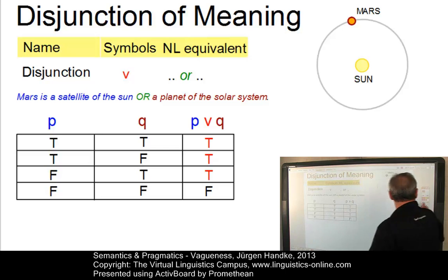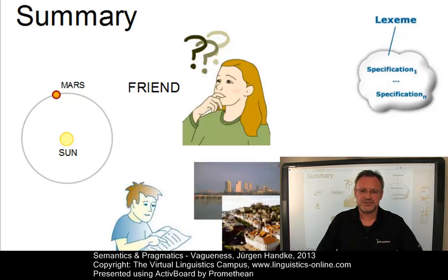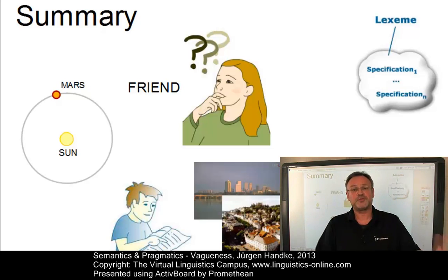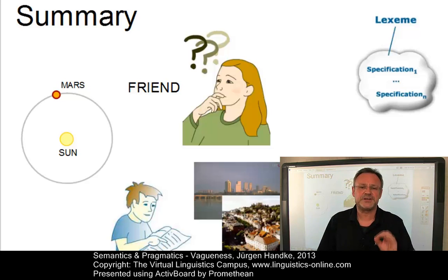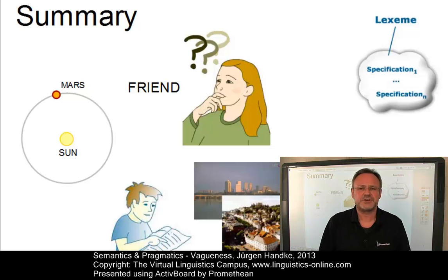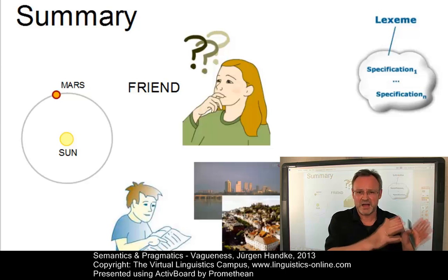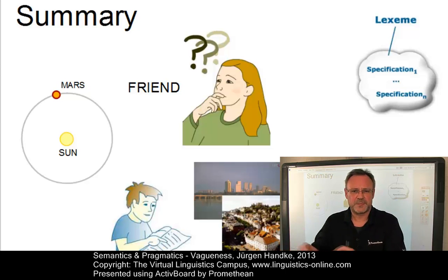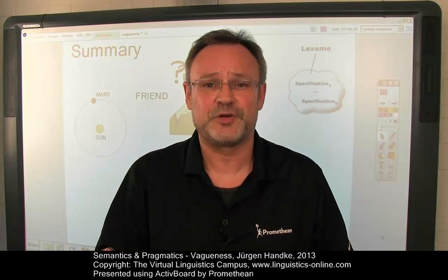So much for the four types of vagueness and some general introductory remarks. As far as ambiguity is concerned — presupposing you have already attended the e-lecture on ambiguity — it is often difficult to decide whether a certain case of multiplicity of interpretations is an instance of ambiguity or vagueness. For this reason, several tests have been proposed upon which that decision can be based. These tests will be explained and applied in a follow-up e-lecture. See you there.